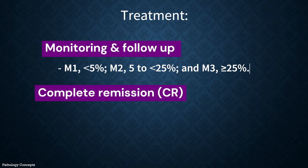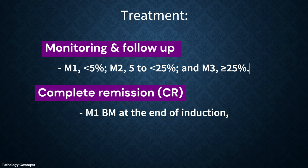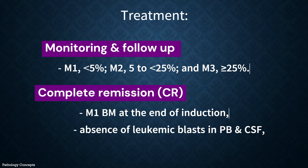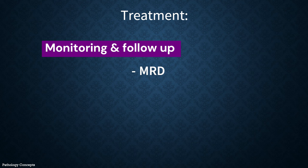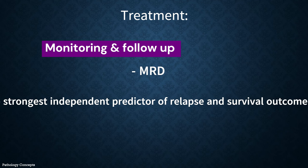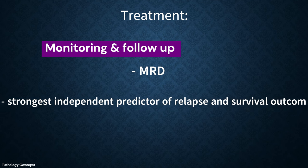Complete remission is defined as M1 bone marrow at the end of induction, absence of leukemic blasts in peripheral blood and CSF, and no evidence of local disease. MRD — minimal residual disease or measurable residual disease — refers to the presence of a small number of malignant cells in a leukemia patient during or after treatment. MRD is below the detection limit of morphology and is usually detected by flow cytometry and/or molecular methods. MRD is the strongest independent predictor of relapse and survival outcome.